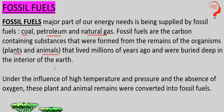Jitni bhi fossil fuels hain, un sab mein carbon ki containment bahut zyada hoti hai — bahut zyada carbon-containing substances hoti hain, jo form hui hain remains se. Kis cheez ki remains se? Organisms jaise ki plants aur animals ke jo remaining particles raha gaye the, woh sab million and million of years ago, bahut bahut pehle, jitni bhi cheezein earth ke andar bari ho gayi thi, deep down jam gayi thi, woh sari cheezein ab coal, petroleum ya natural gas ke roop mein hain.